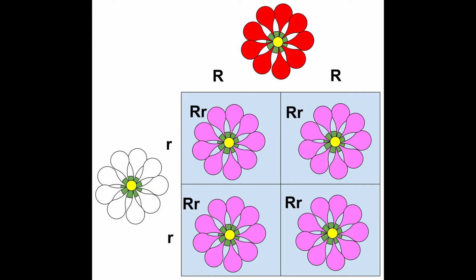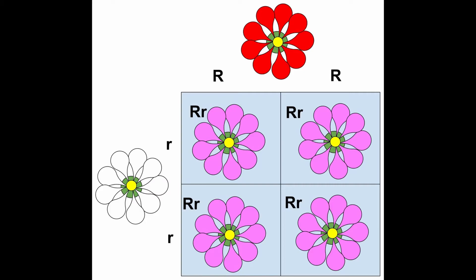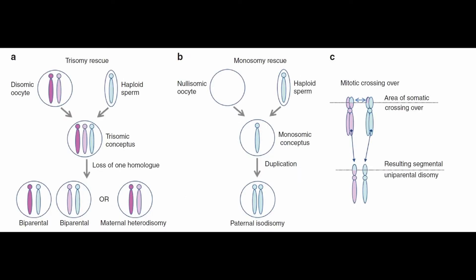The law of segregation states that a diploid organism with two of each allele produces gametes with one allele each. We know that there are some differences between the formation of oocytes and sperm cells, but ultimately we end up with haploid egg and sperm for diploid organisms. There could be some exceptions, though.